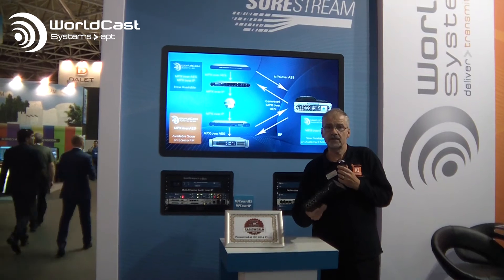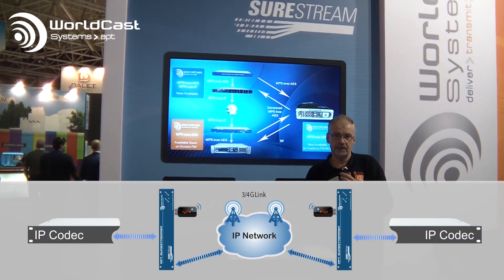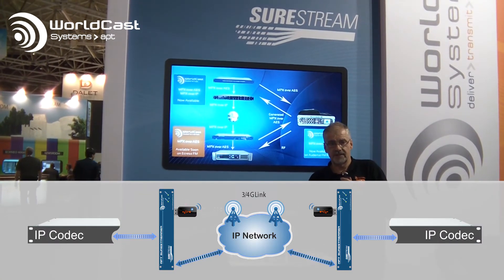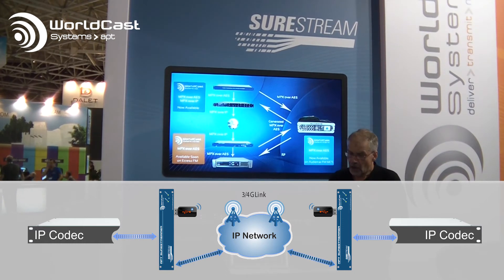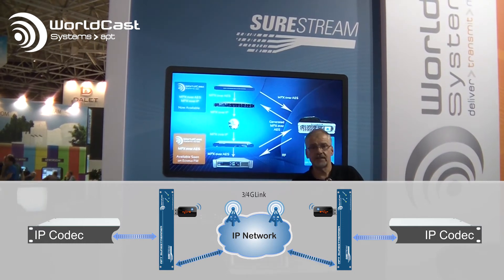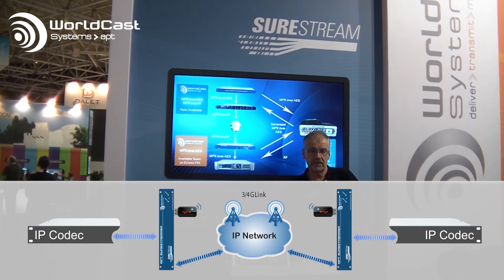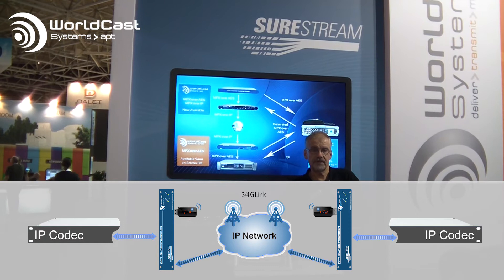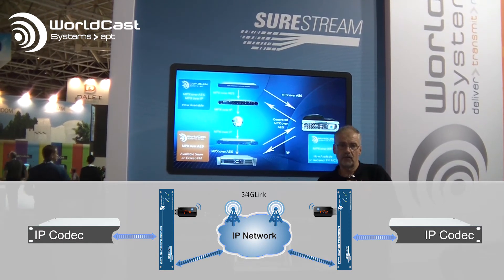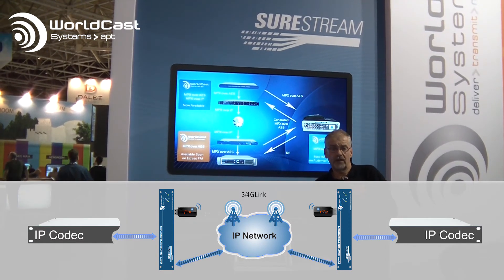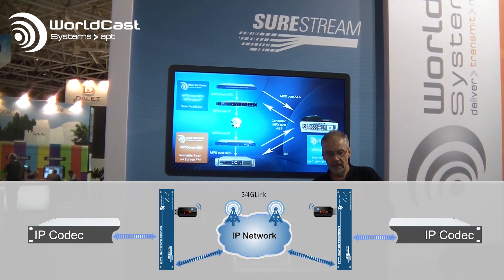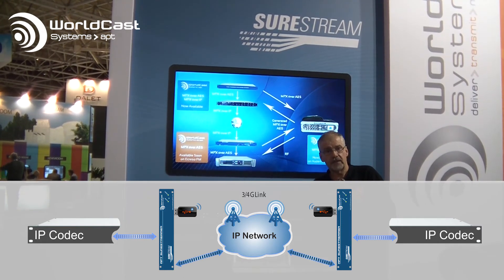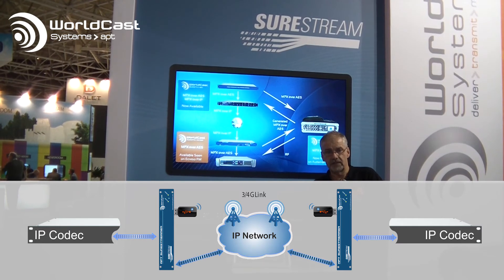At the far end we have the same process in reverse to bring our signal back to the IP codec. You'll also notice that there are four USB ports on this box. These can be used for wireless networking dongles or for 3G or 4G dongles, meaning that we can use 3G or 4G as our network connection medium.